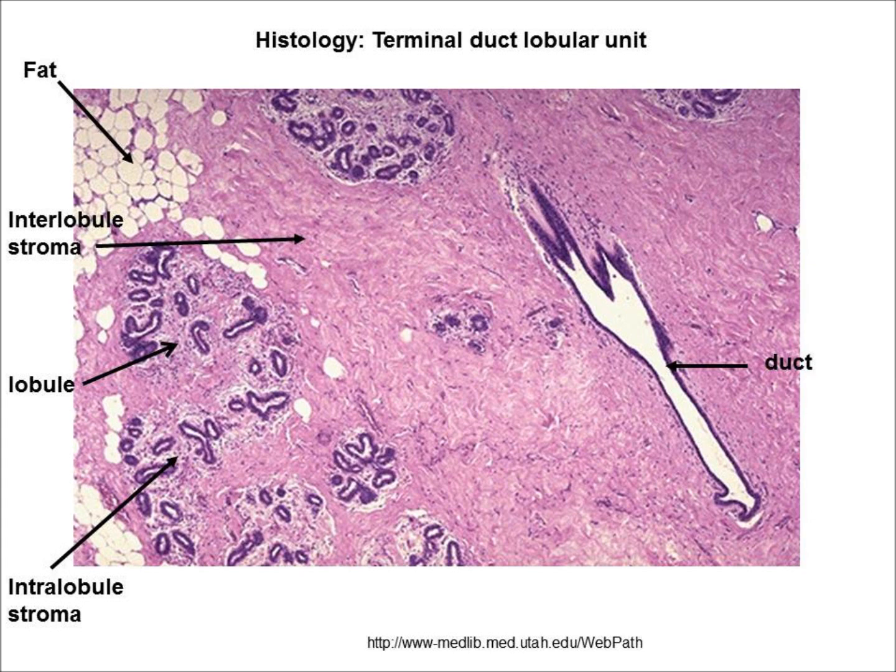This is a low-power view of an H&E stained section of the normal breast. Most of the section consists of collagenous connective tissue, here labeled interlobular stroma — stromal being the structural or connective tissue portion of an organ. The terminal ductal lobular unit, here labeled simply lobule, contains the terminal ducts and the secretory units. You should note that the collagen within the lobule, here labeled intralobular stroma, stains slightly lighter than the interlobular stroma.